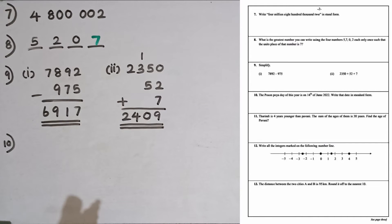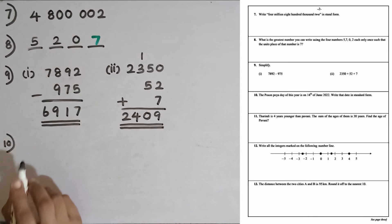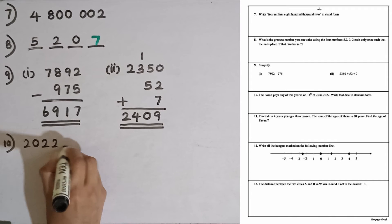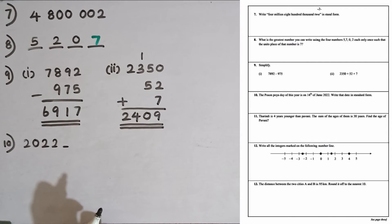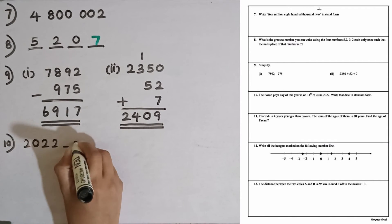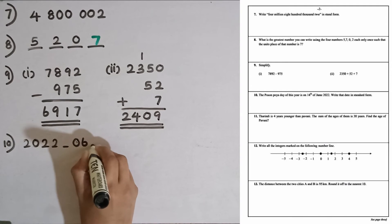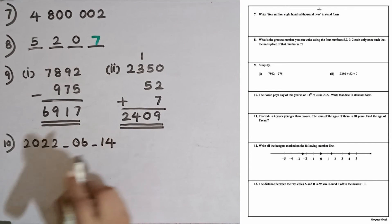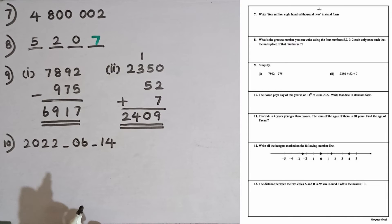Question number ten: a special day of this year is on 14th of June 2022. Write that date in standard form. When writing a date in standard form, first we write the year with four digits: 2022, then a small dash, then the month in 2 digits — June is the 6th month, so 06 — then the date in 2 digits: 14. So the standard form is 2022-06-14.